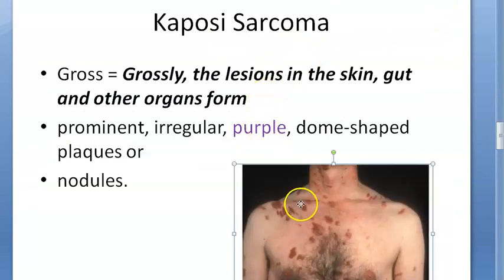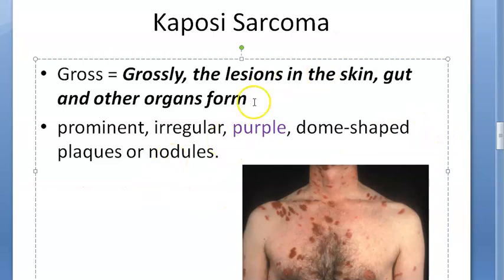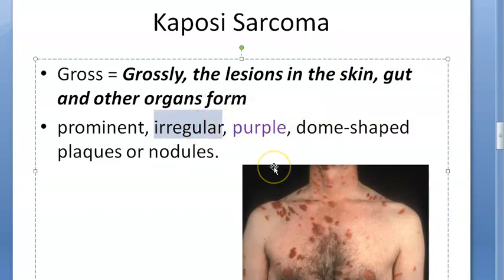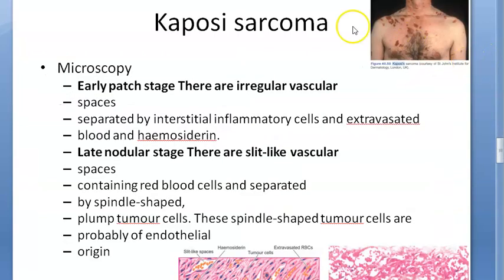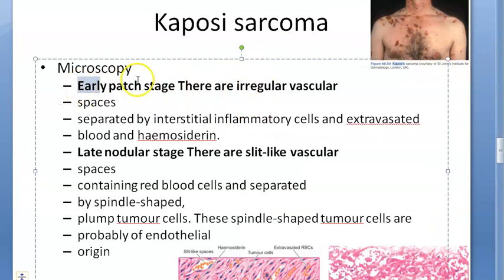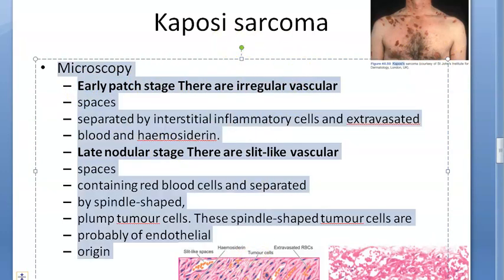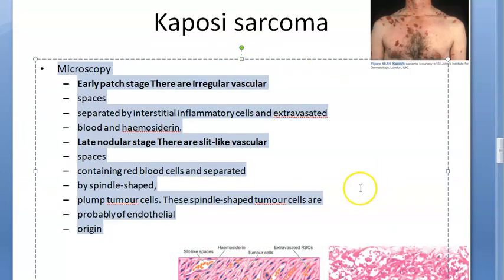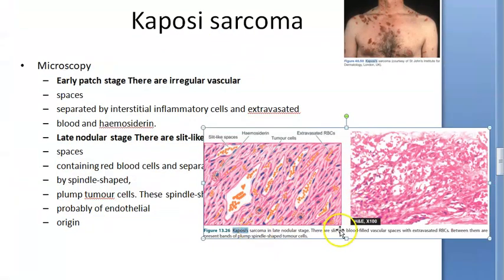Grossly, you will see irregular purple dome-shaped plaques or nodules, most prominently in the skin and the GI tract, and even other organs. Remember: purple and irregular — which is why malignant melanoma should be kept as a differential diagnosis. Microscopically, there is an early patch stage and a late nodular stage; the microscopy images are shown here.